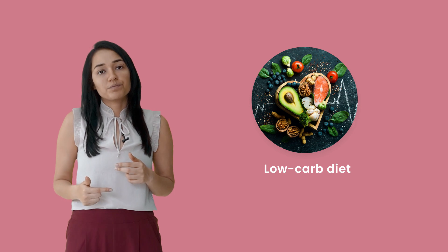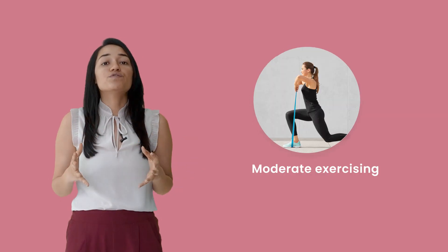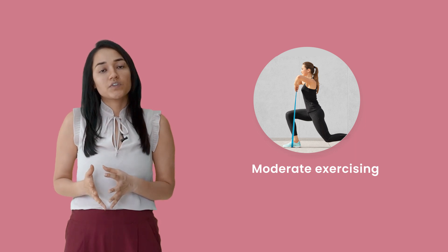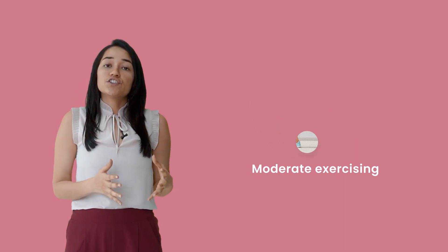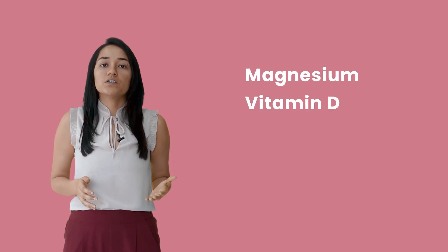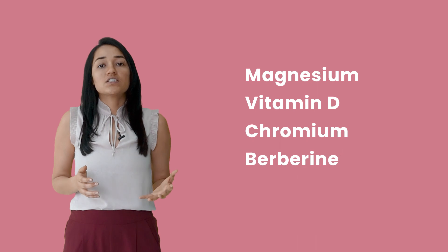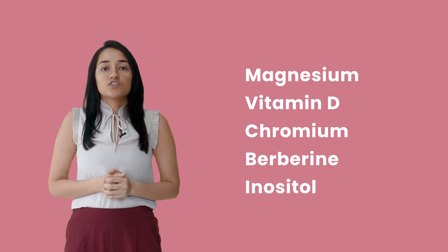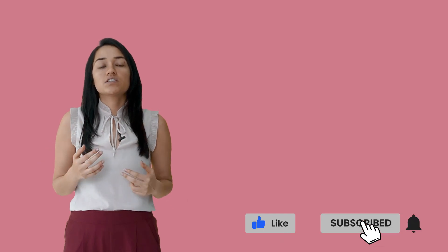You can also start by moderate exercising, which improves your insulin sensitivity. In addition to your healthy diet, you can also start using certain supplements which can be helpful with insulin resistance, for example, magnesium, vitamin D, chromium, berberine, inositol, etc.